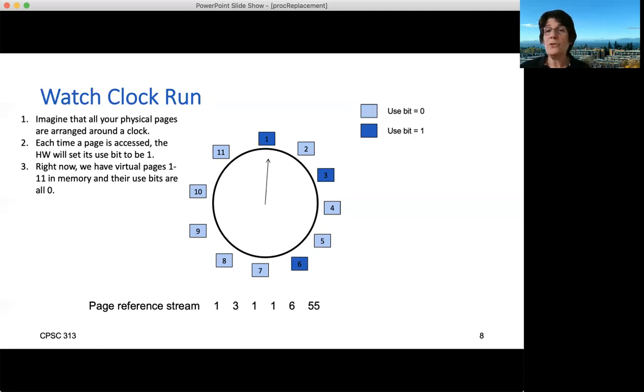But now we say I want page 55. There's no translation for that. So the hardware hands control over the operating system. The operating system goes okay, I know how to find a page. I'm going to look at my clock hand. My clock hand is currently pointing to page one and its use bit is set. So I'm going to leave page one in memory. But what I'm going to do is I'm going to clear its use bit. And then I'm going to advance my clock hand to look at the next page. And sure enough, I got lucky. This page does not have a use bit set. So I'm going to go ahead and I'm going to get rid of two and bring in 55. So I've found a spot for this new page that looks like it was a pretty good choice.